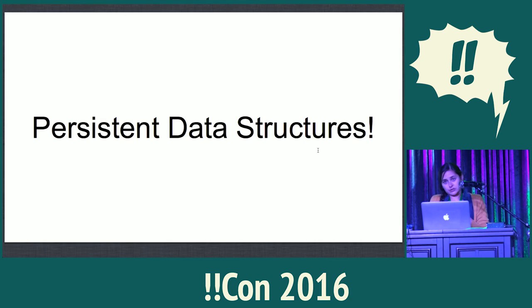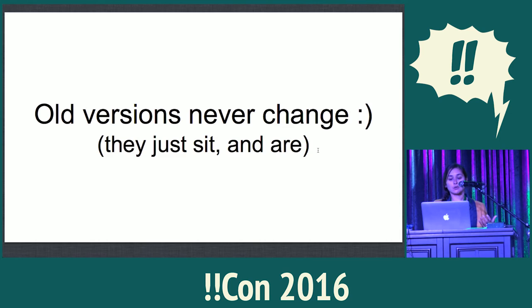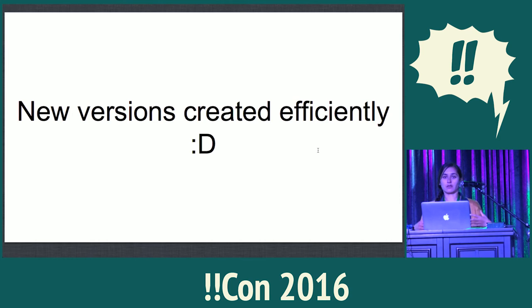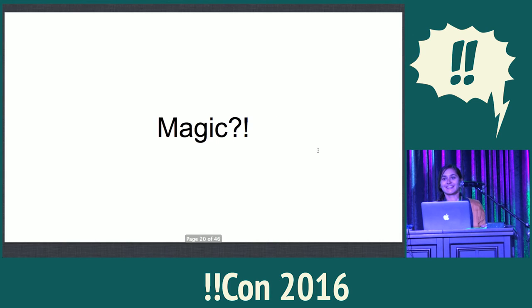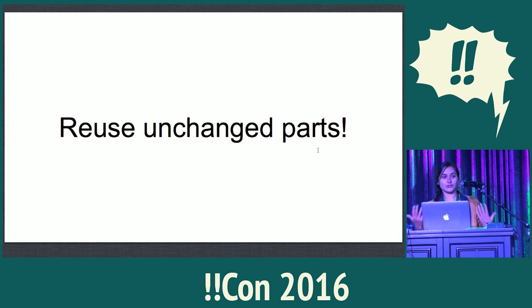The basic idea of persistent data structures is just that the old versions never change — the old versions of an object just sit and are like rocks. But ideally, when we talk about persistent data structures, we're trying to do this in a way that's more efficient when I want to update or change something about the old version. We want that efficiency, and the idea is to reuse unchanged parts of our old versions of the data structure.